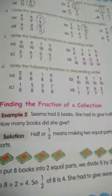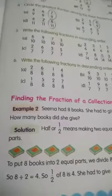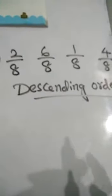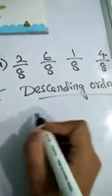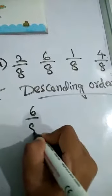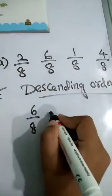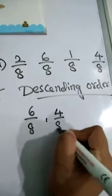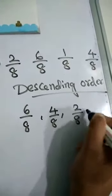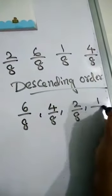We have to write these fractions in descending order. Descending order means big to small. Among these 4, 6 by 8 is the biggest. So: 6 by 8, 4 by 8, 2 by 8, 1 by 8.